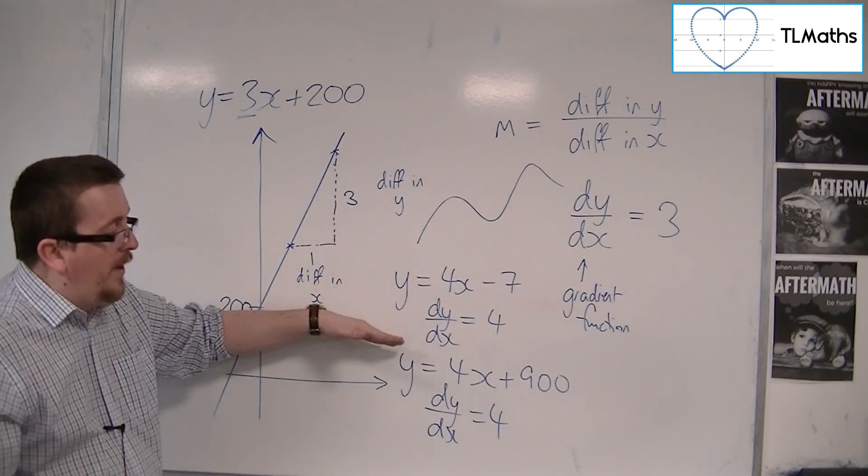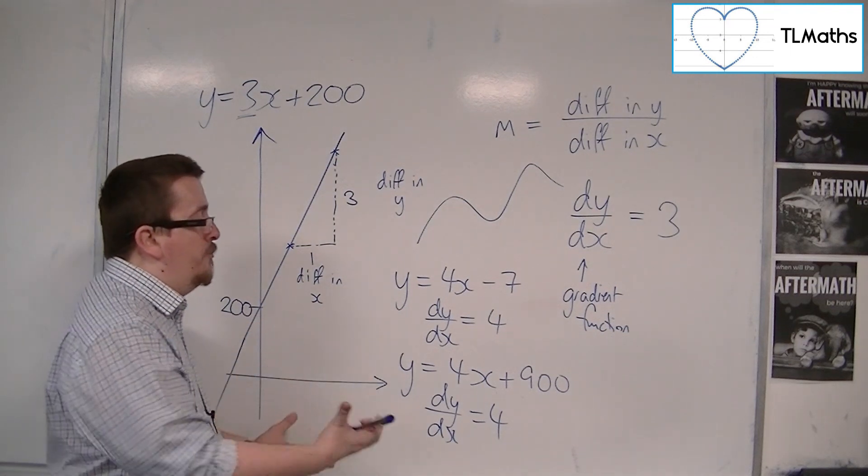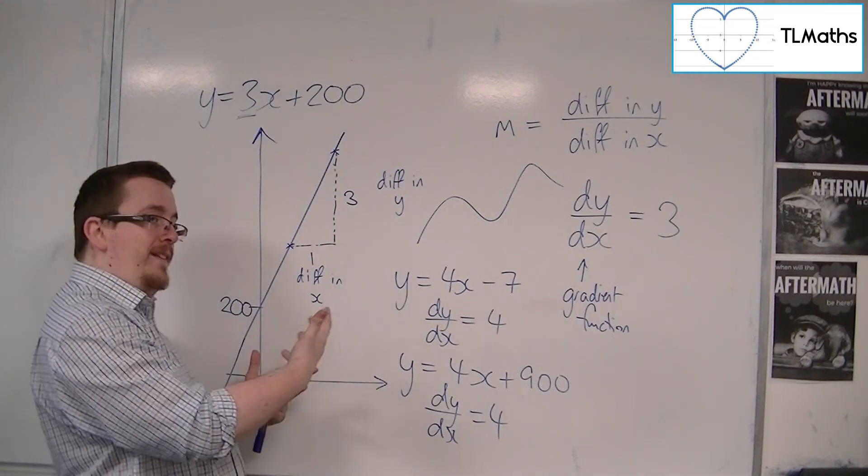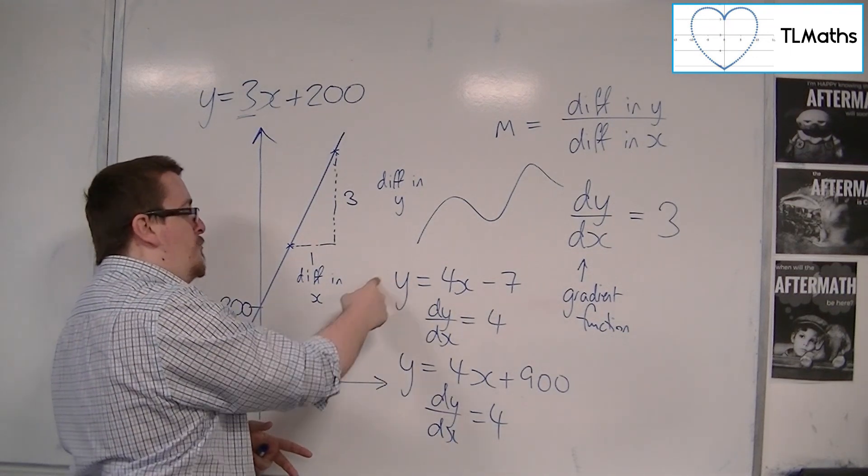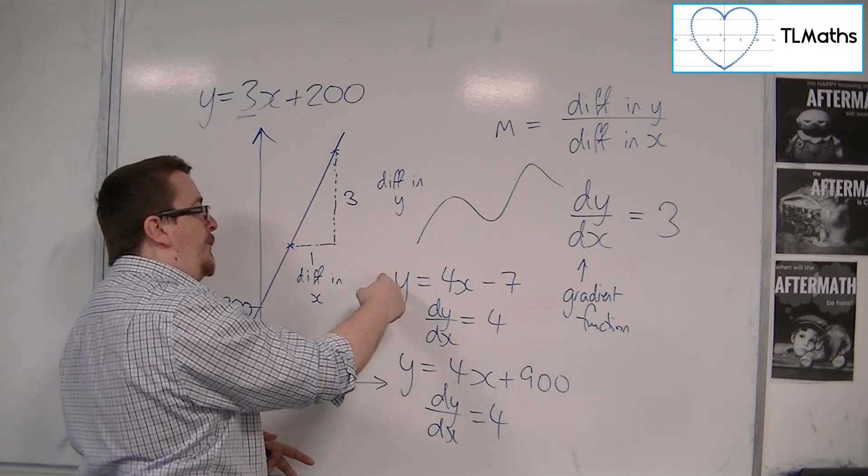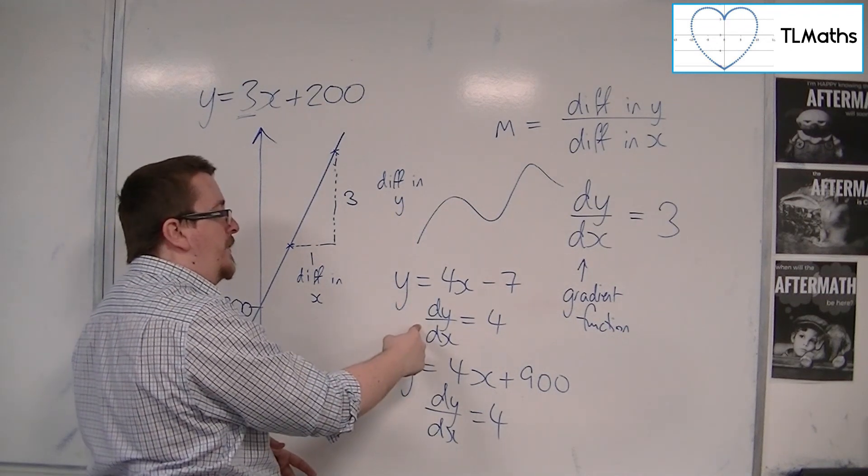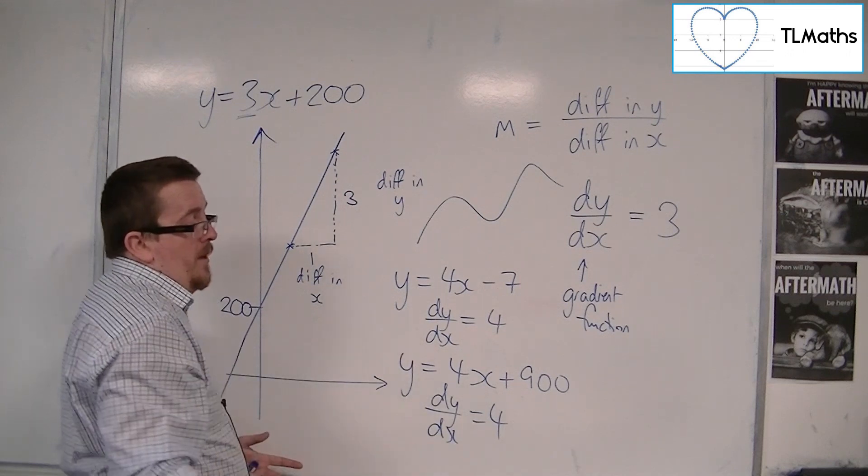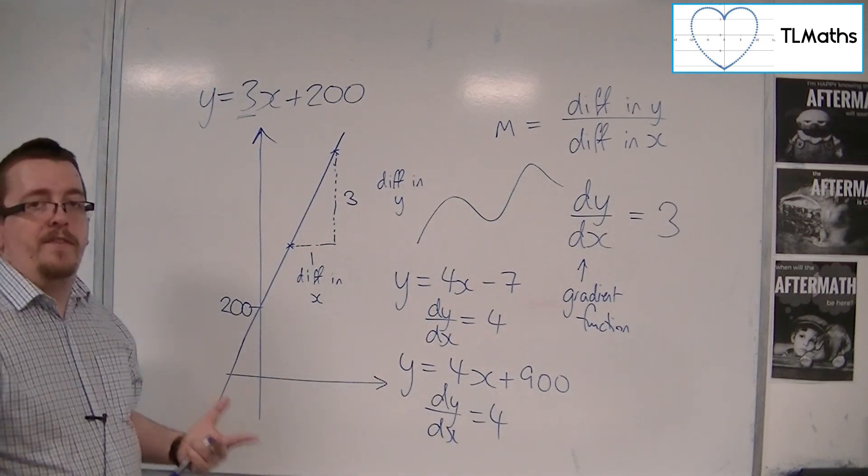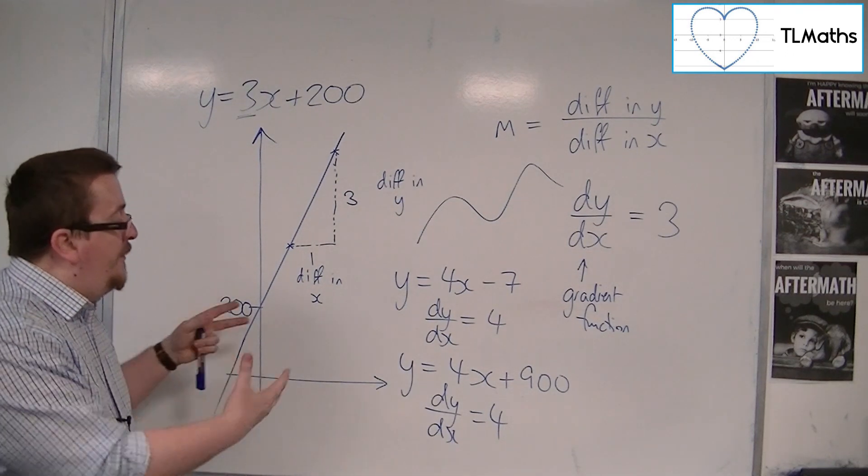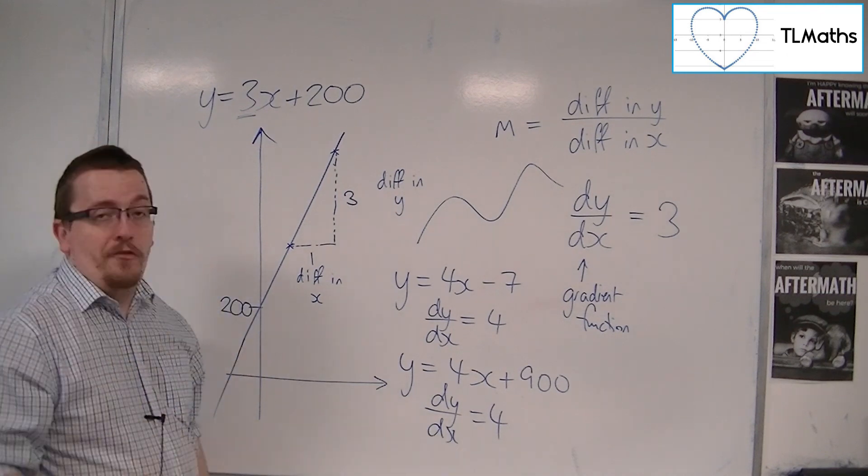Because the gradient of the curve is not fixed. So when we're differentiating straight lines, this is the process referred to as differentiating. This process of going from y to dy by dx. For straight lines, you're just identifying the gradient of the line. And this is your first step to differentiation.